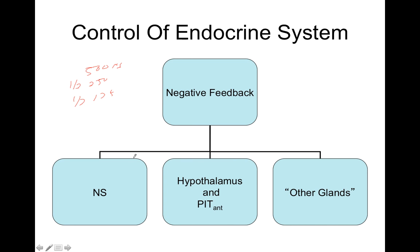The nervous system controlling hormones would include things like epinephrine or norepinephrine from the adrenal medulla, and the hypothalamus with the anterior pituitary. These two are the biggest players in the endocrine system. Other glands release hormones when substrates or molecules fall or rise to a certain set point — for example, when blood glucose goes up, the pancreas releases insulin.